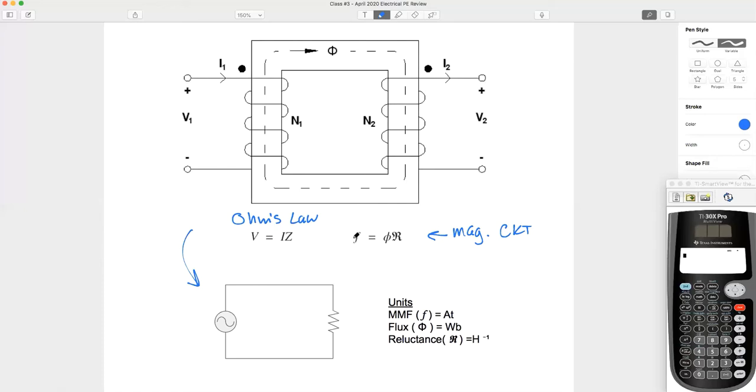So instead of voltage, we've got magnetomotive force. Instead of current, we've got our flux. And instead of impedance, we've got our reluctance. So normally if we're dealing with Ohm's law, we've got V plus or minus, here's our current in this loop, and here's our impedance.